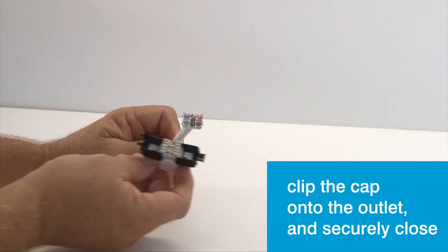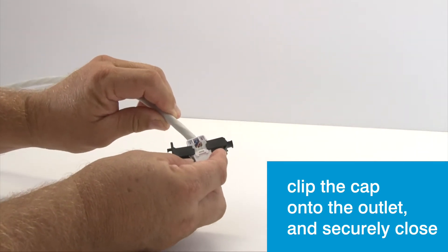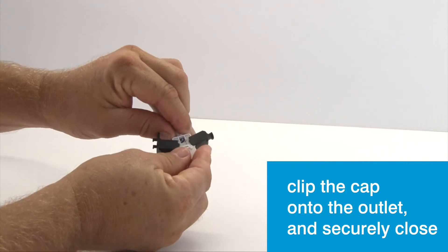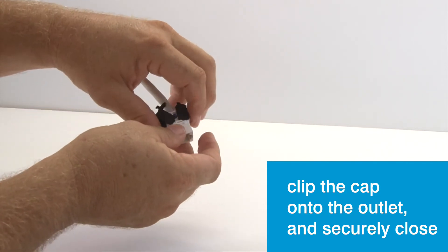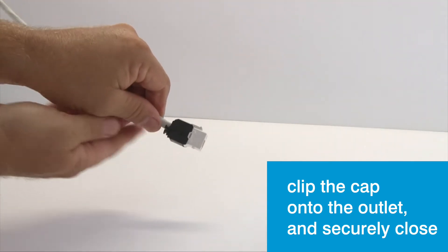Grab your outlet and just make sure the color-coded slots in the cap and in the outlet are matching up. Clip the cap onto the outlet. It'll make an audible click, and then secure the closing pieces shut.